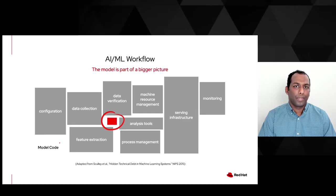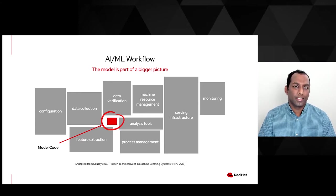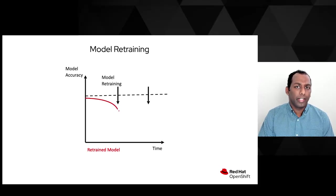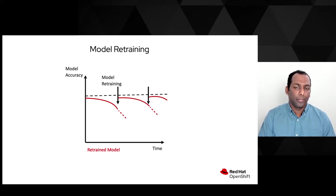MLOps synergizes data, process, technology, and people to overcome the challenges of productizing the AI model. The AI ML workflow must be built to support the evolving changes of a data scientist and the models they create, because models degrade as the prediction accuracy changes. They need to be continuously monitored, retrained, and redeployed to ensure prediction accuracy in the production environment. This is how you productize the AI ML model with MLOps.